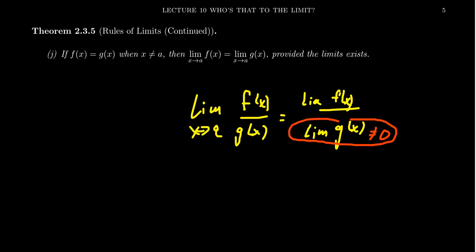But if the denominator is zero, it turns out funky things can happen. The limit might exist, it might not — it could be a vertical asymptote. There are some interesting things going on there, so we have to investigate it a little bit further.